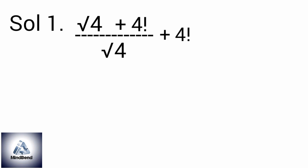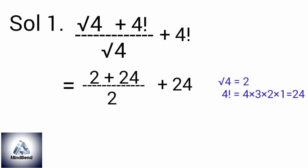Quite easy, as the square root of 4 is 2 and 4 factorial is 24. So it becomes 2 plus 24 divided by 2 plus 24. On solving, it becomes 26 by 2 plus 24, which results in 37. That's one solution.